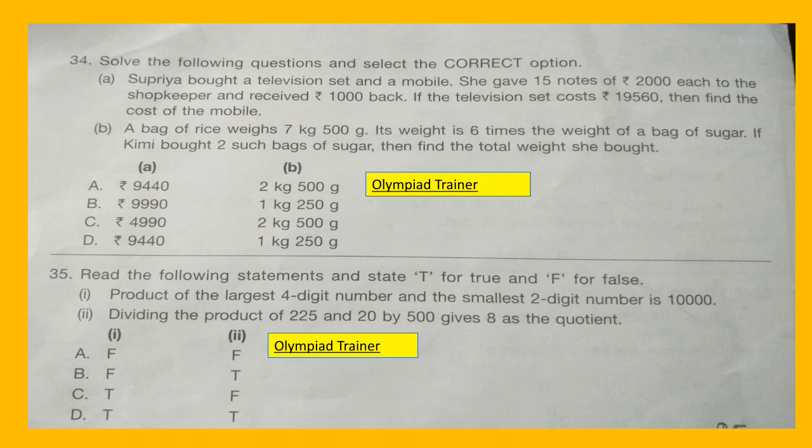Question 34: Solve the following questions and select the correct option. Part A: Supriya bought a television set and a mobile. She gave 15 notes of Rs. 2000 each to the shopkeeper and received Rs. 1000 back. If the television set costs Rs. 19,560, find the cost of the mobile. Part B: A bag of rice weighs 7 kg 500 gram, which is 6 times the weight of a bag of sugar. If Kimmy bought 2 such bags of sugar, find the total weight she bought.